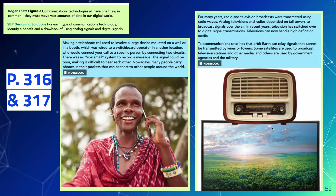For many years, radio and television broadcasts were transmitted using analog radio waves, depending on tall towers to broadcast signals over the air. In recent years, televisions have switched to digital signal transmissions, allowing them to handle high-definition media. Telecommunications satellites orbiting Earth can relay signals that cannot be transmitted by wires or towers.